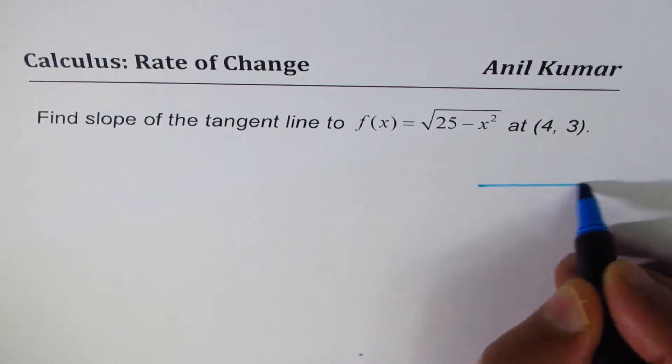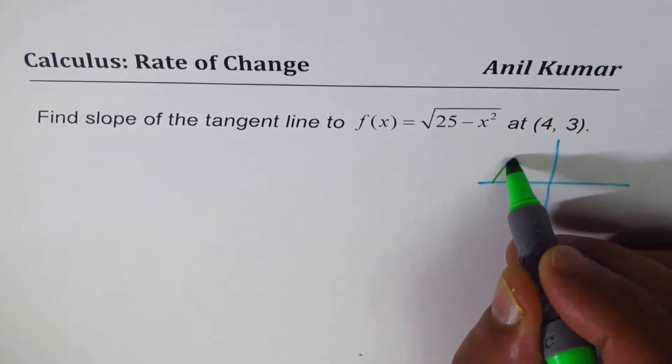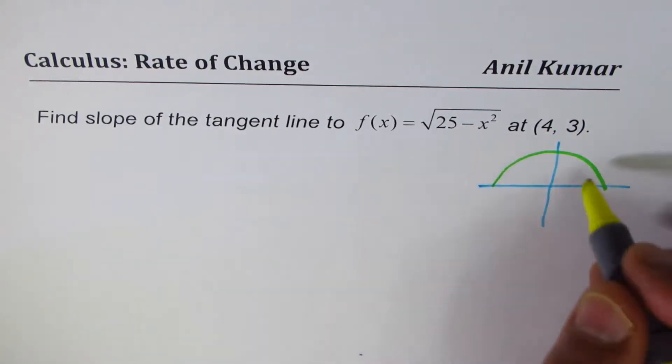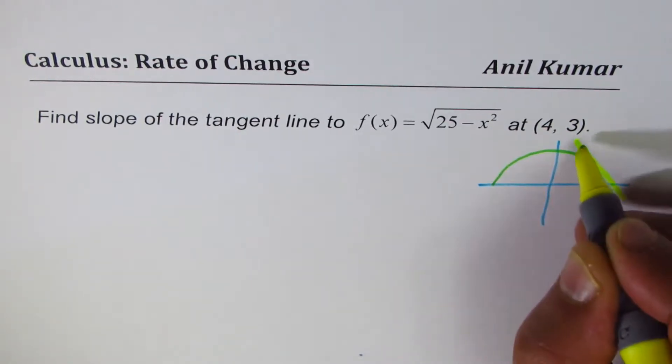So if you sketch this function, this is a semicircle with radius 5. Kind of like this. The point (4, 3) could be somewhere here. So we're trying to find the slope of this tangent line.